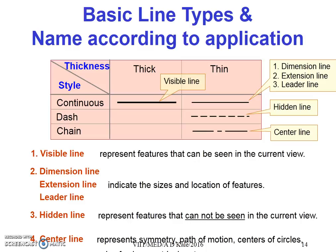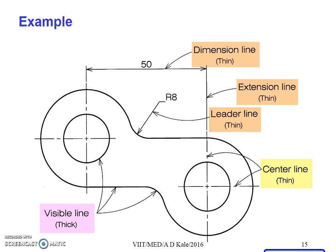Students are advised to refer to and study the nature of different lines in the textbook. This is one example of a component represented on the drawing. To understand the distance between two circles, dimension lines are used. Extension lines are also used. Leader lines are used to indicate the curve or radius feature provided to the component, and the visible line is the outline of the object.